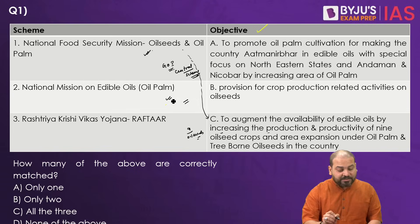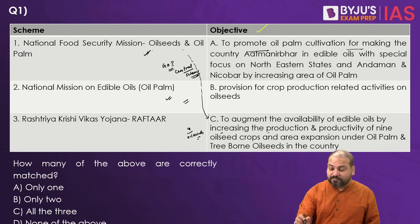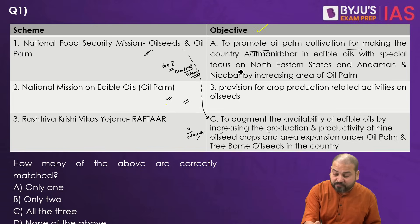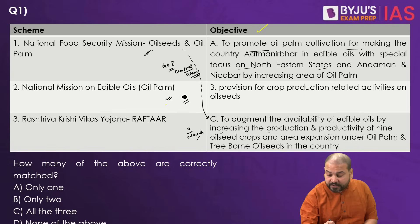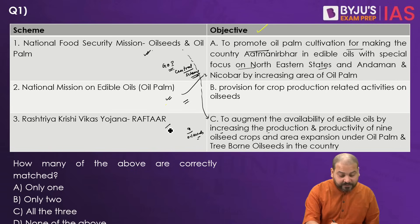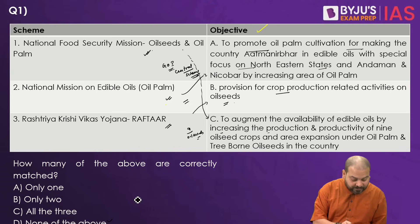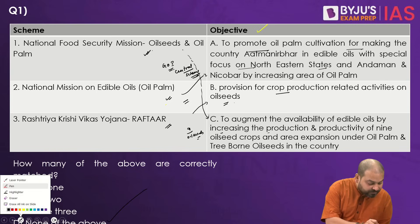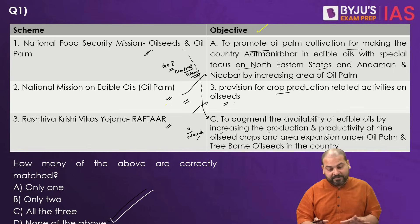Now coming to the second one — National Mission on Edible Oils or Oil Palm — this is to promote oil palm cultivation for making the country Aatmanirbhar in edible oils, with special focus on Northeastern states and Andaman and Nicobar, by increasing area under oil palm. The third one, the Raftar scheme, is basically provision for crop production related activities on oil seeds. So the answer to this question becomes D — all three objectives and schemes are incorrectly matched.